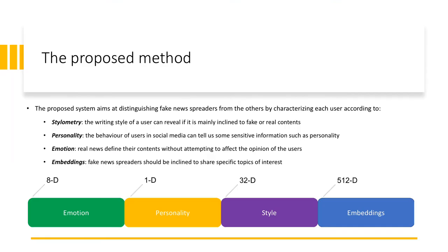The problem of fake news and rumor detection has gained a lot of attention during the last years, because if users get their news from social media they could encounter the risk of being exposed to false or misleading information. In order to provide some mechanism for fighting this type of misinformation, one potential solution is related to the anomaly detection of those people that online are mainly aimed at spreading these false contents. In this talk we are going to present our proposed system that aims at distinguishing authors that have shared fake news in the past from those that have never done it, by characterizing each user according to a set of features.